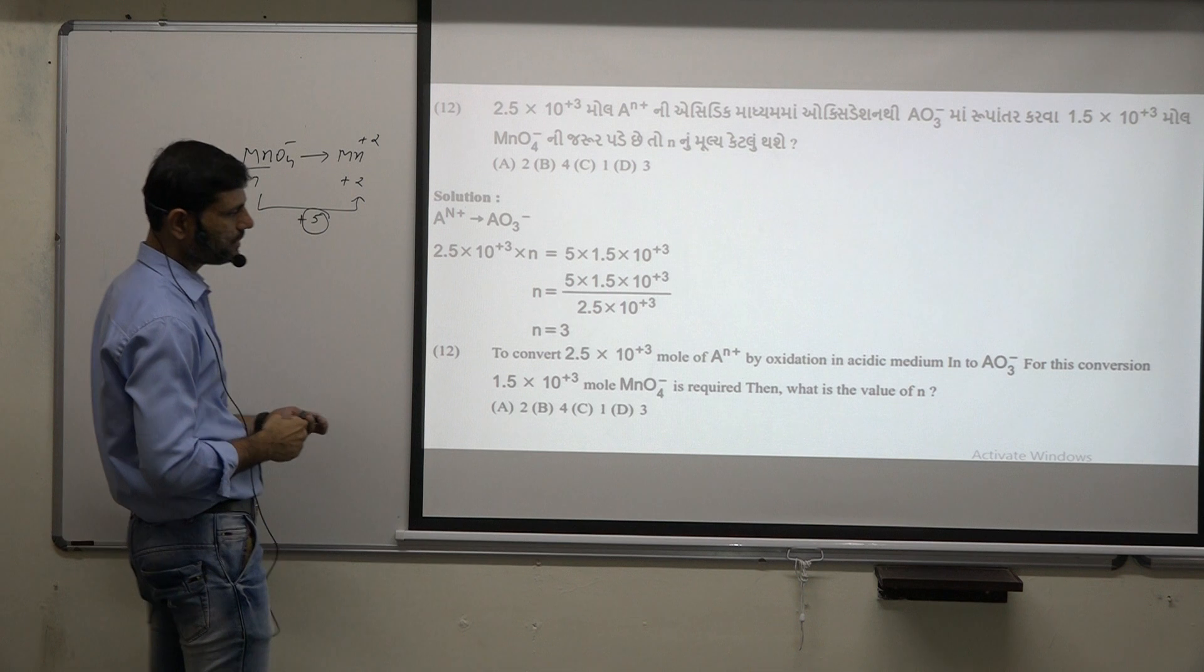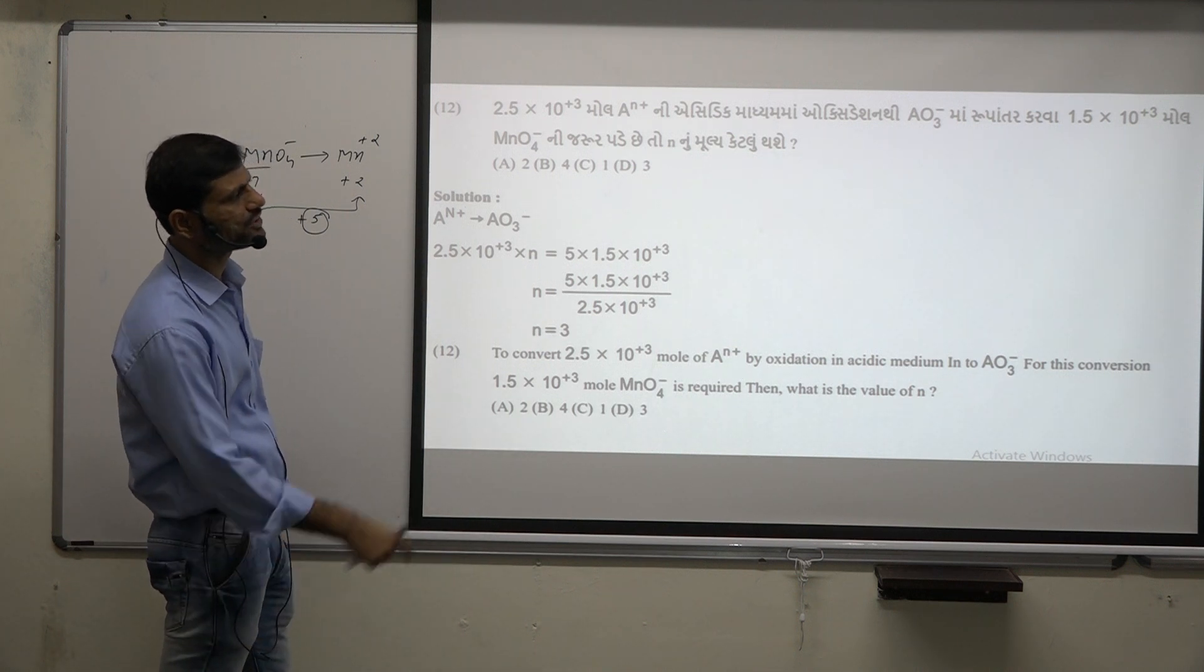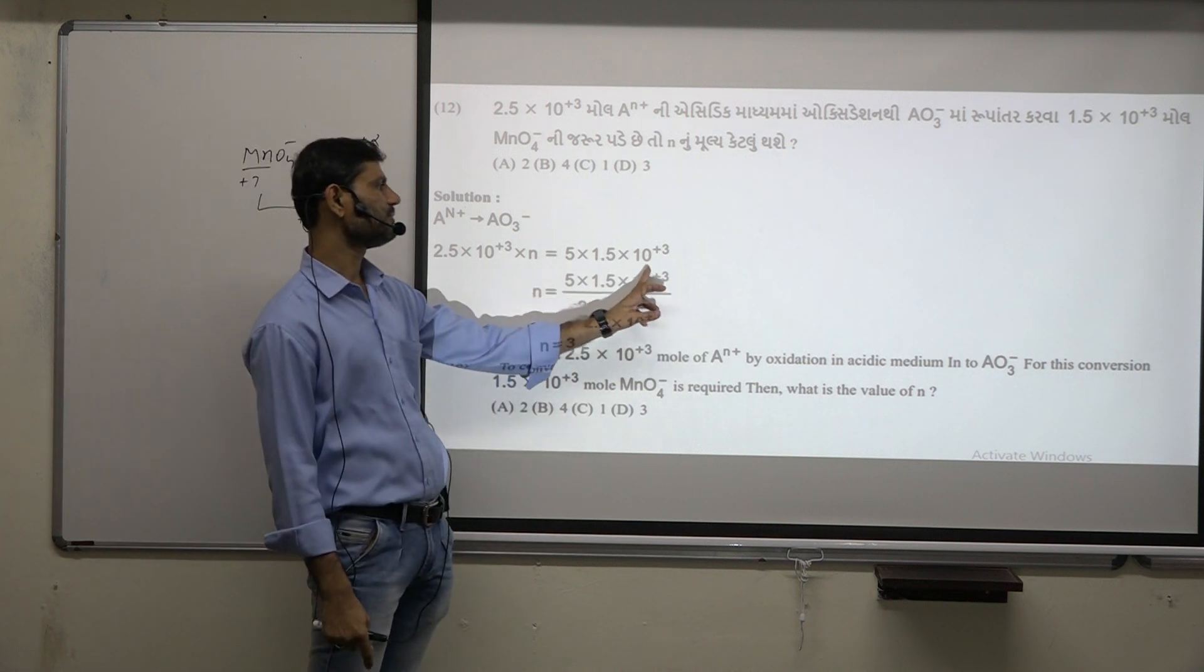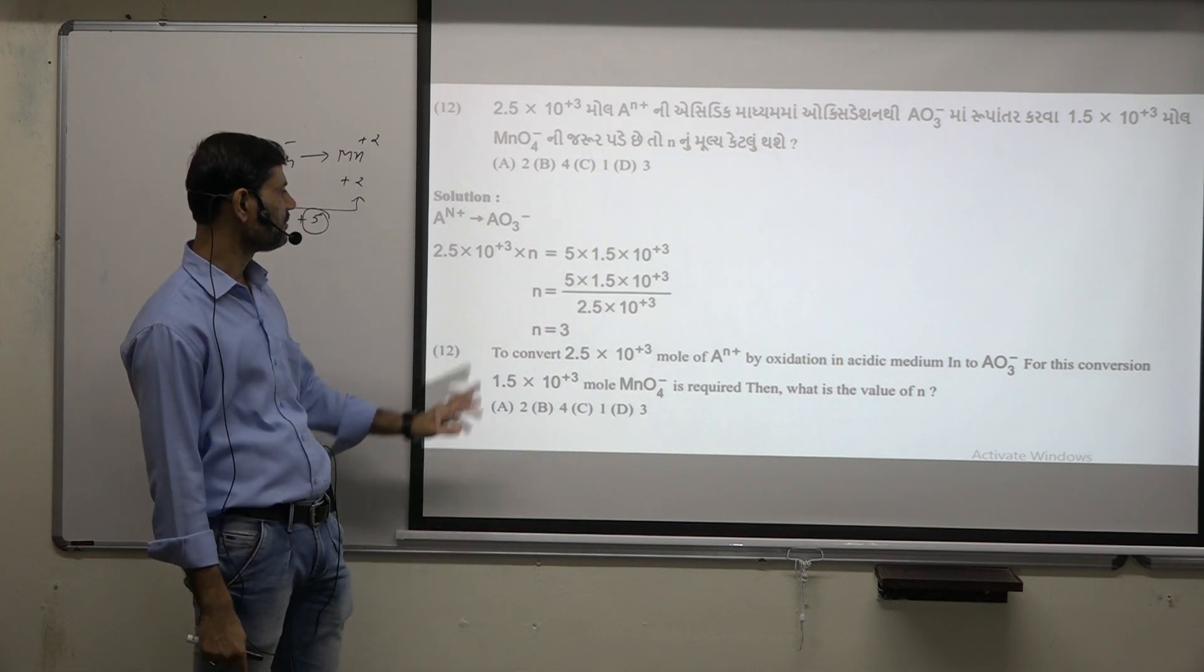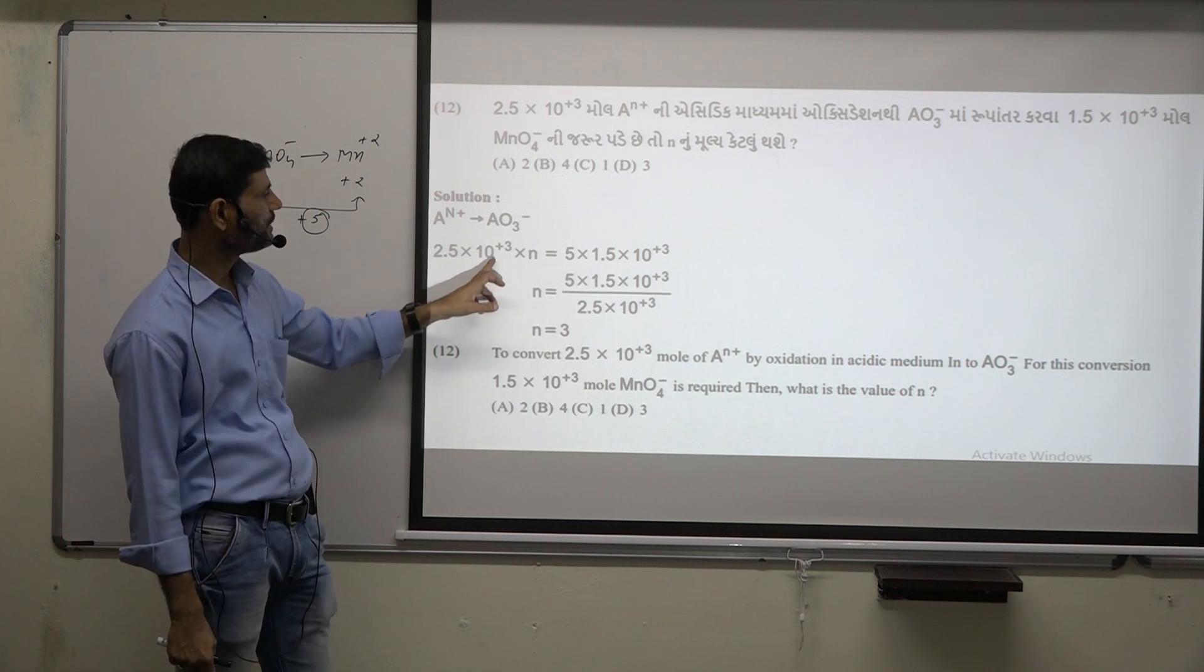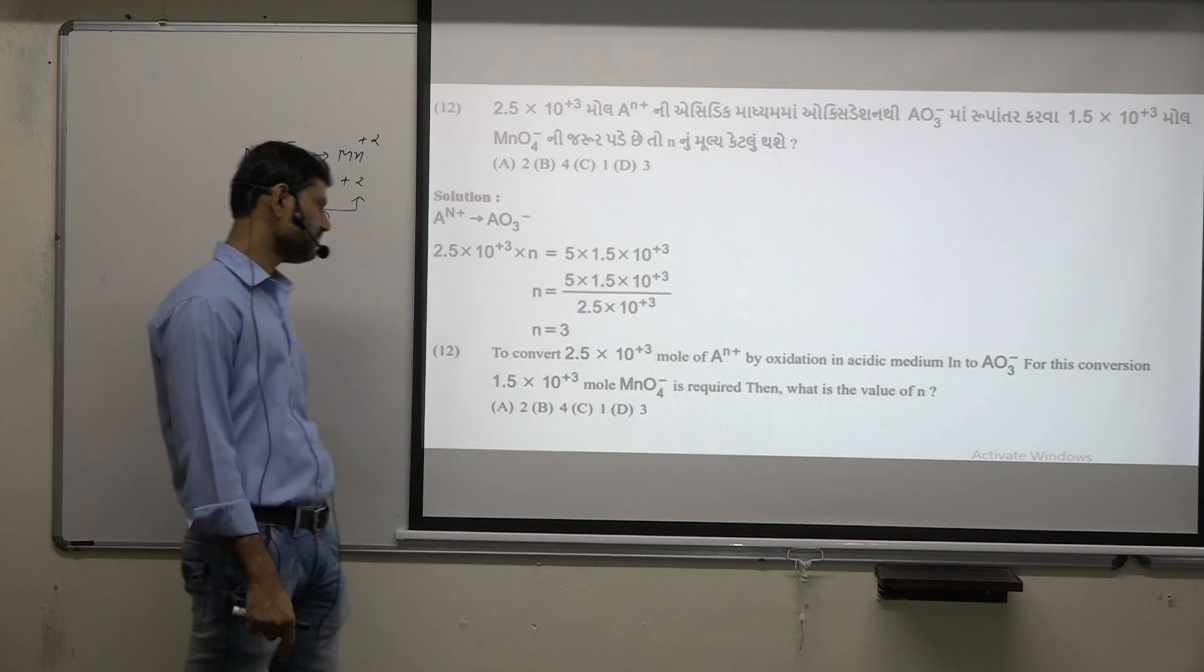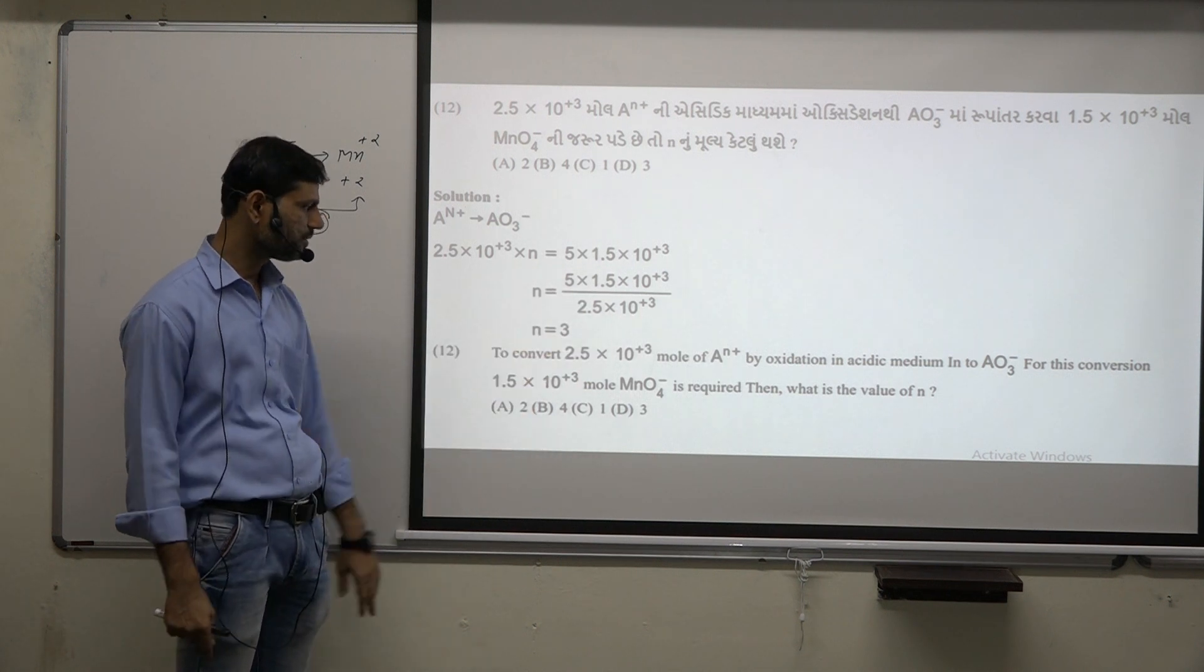If we look at MnO4^-, MnO4^-, how much is it? 1.5 times 10^3. So 1.5 times 10^3 multiply by 5. We multiply all the n, so 2.5 times 10^3 times n is equal to 5 times 1.5 times 10^3. So n is equal to 3.